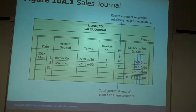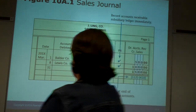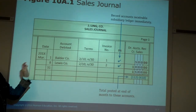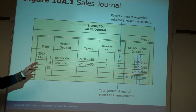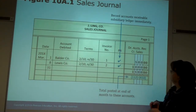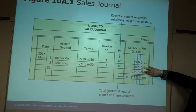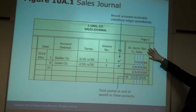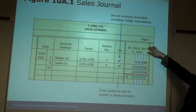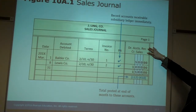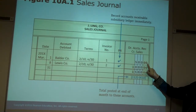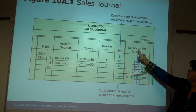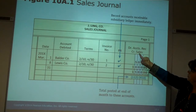So what is a special journal? Here's an example of what the sales journal would look like. Every transaction when we're recording a sale on account is always going to be the same: we've got a debit to accounts receivable and a credit to sales. If we go to the sales journal — the special journal — all we have to do is write that number one time.